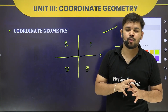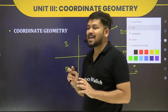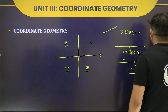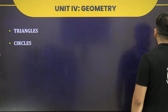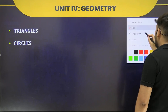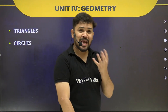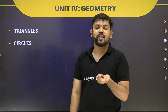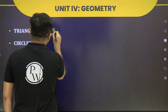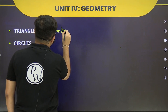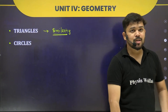Coordinate geometry is a very interesting chapter. There are many formulas, but you need not worry — you can easily remember and relate to them. Moving on to Geometry, specifically Triangles. In previous grades, you covered congruency of triangles and different criteria. Now there is a new concept: similarity of triangles, with its different conditions and criteria.